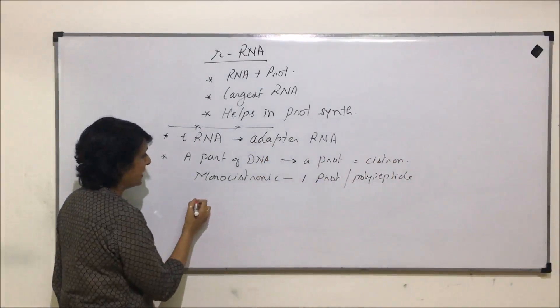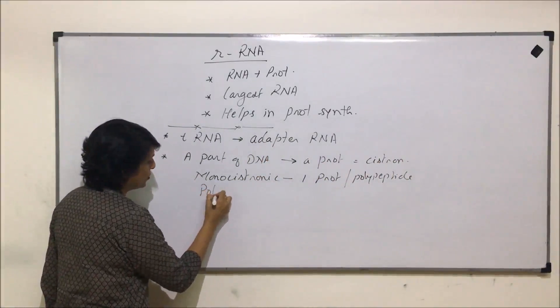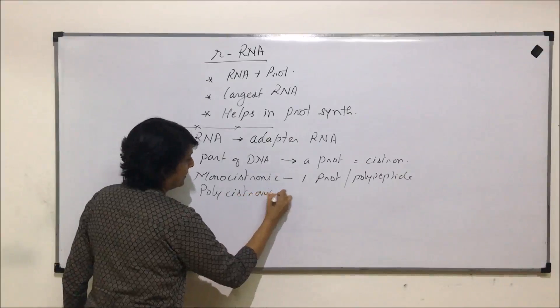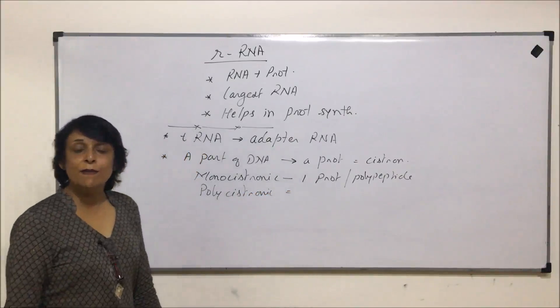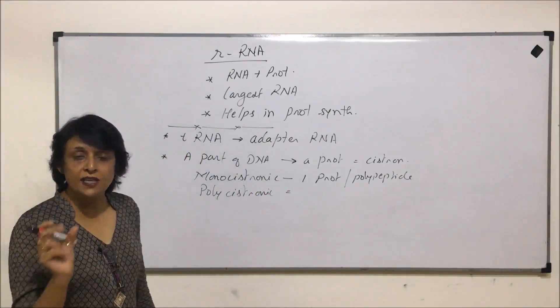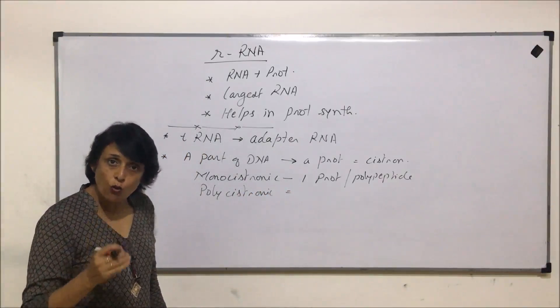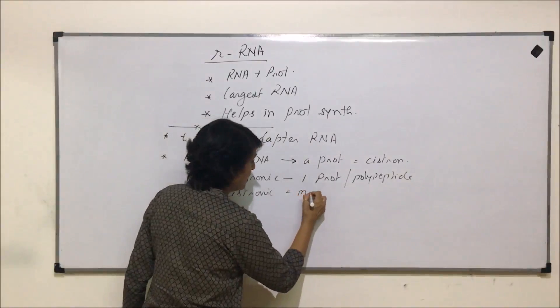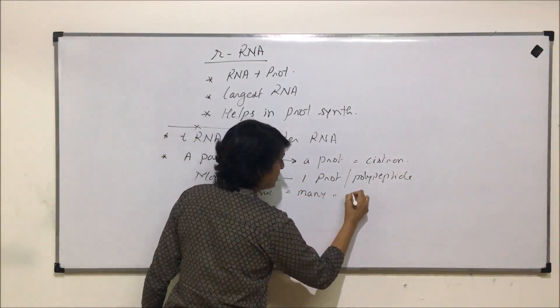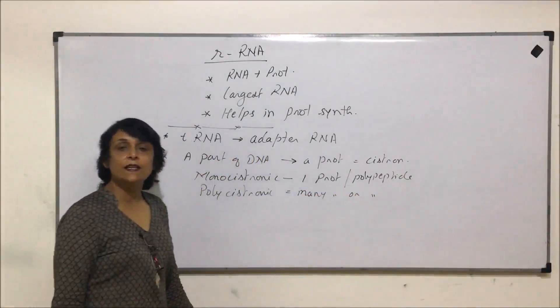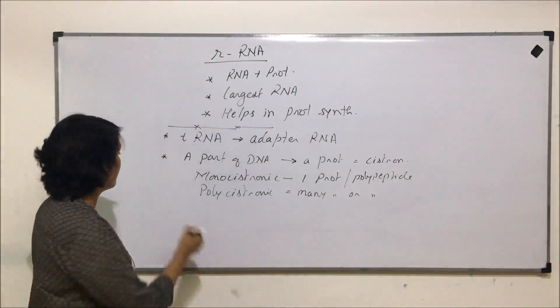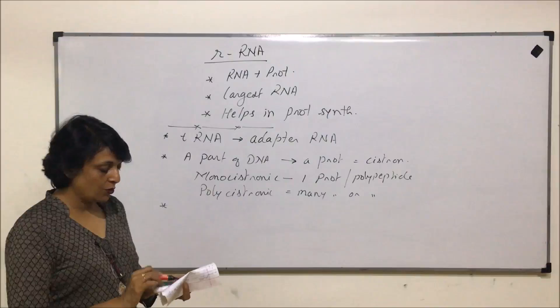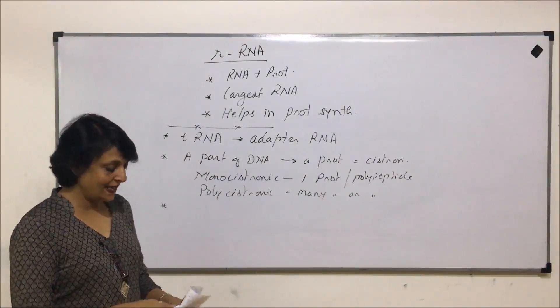The other thing is polycystronic. That means one segment has multiple genes or segments of DNA coded which synthesize many proteins. Here there are many proteins or polypeptides. Then it will be termed as polycystronic.